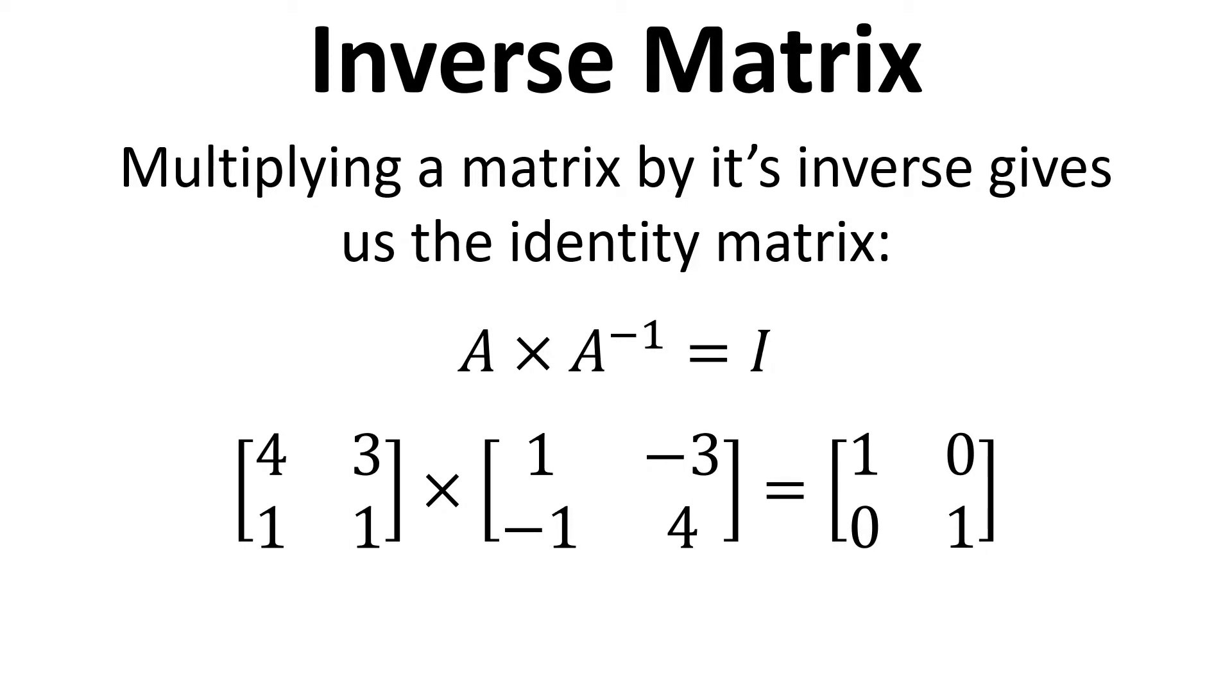So here's an example, we've got a 2 by 2 matrix with entries of 4, 3, 1, 1. When we multiply that by its inverse we get the identity matrix. Now the inverse of this particular matrix is another 2 by 2 matrix which has entries of 1, minus 3, minus 1 and 4. And multiplying those together we get the identity matrix as shown.